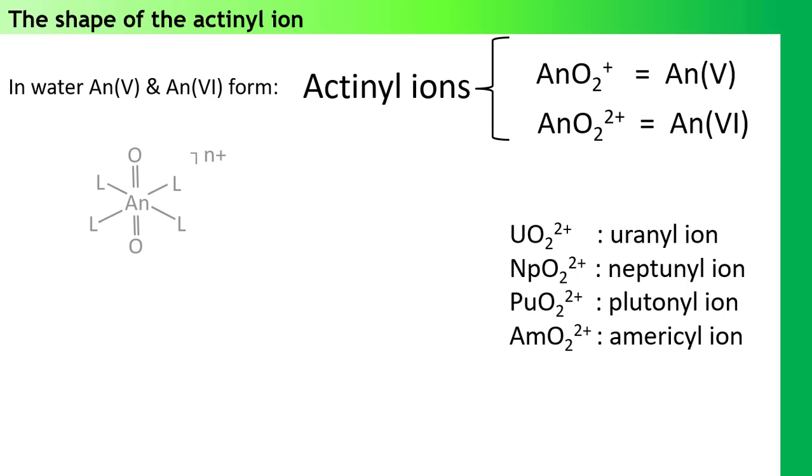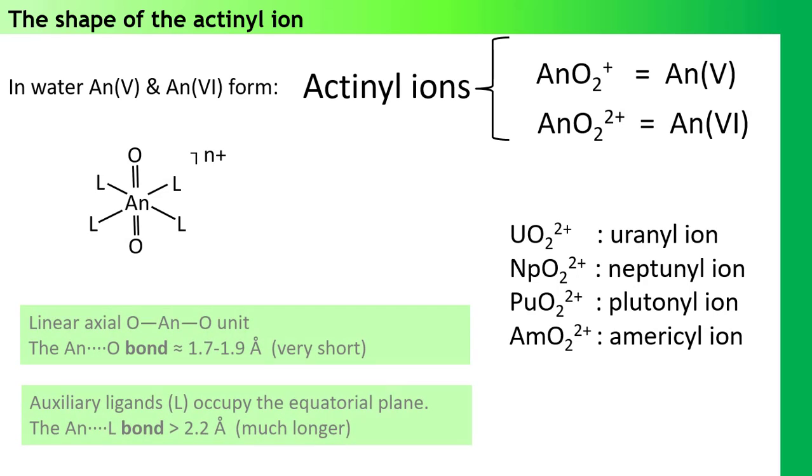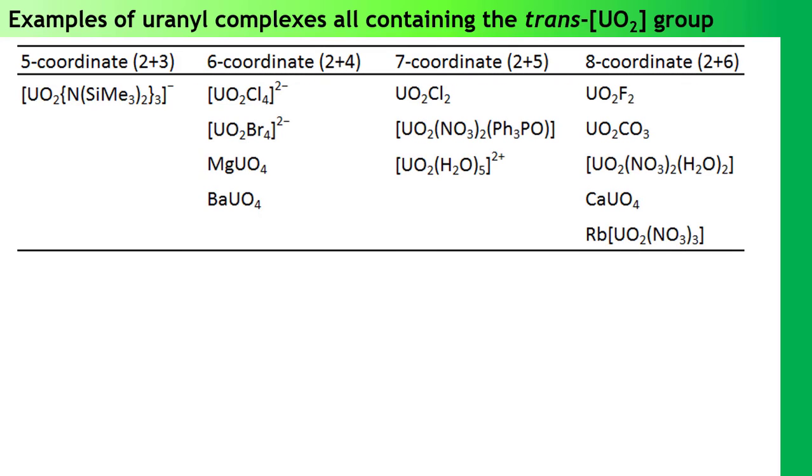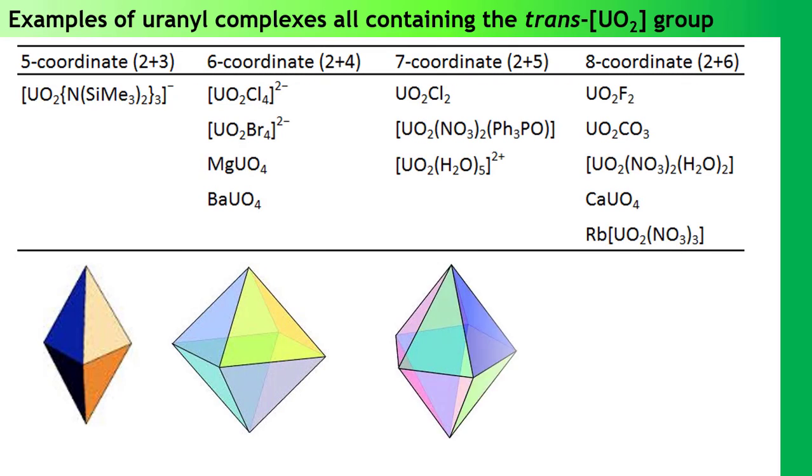Structurally, all actinyl ions have a linear arrangement of the three atoms. It is useful to think of the oxygen atoms as forming an axial part of the metal coordination environment, and it makes sense to define this as a z-axis. The metal-oxygen distances are very, very short, while the bonds to equatorial ligands are much longer. The formation of these actinyl ions dominates the chemistry of these elements when in the plus 5 or the plus 6 oxidation states. So, for example, looking at uranium compounds, of which there are hundreds and hundreds, you have to work very hard to avoid forming the uranyl ion. Whether we are talking about discrete molecular species in solution, charged or neutral, or if we have a solid state structure, the uranyl ion is everywhere.